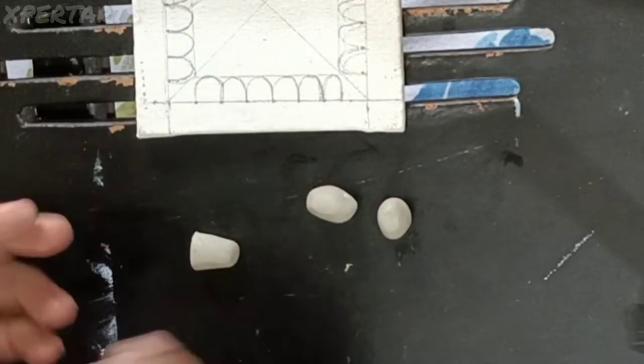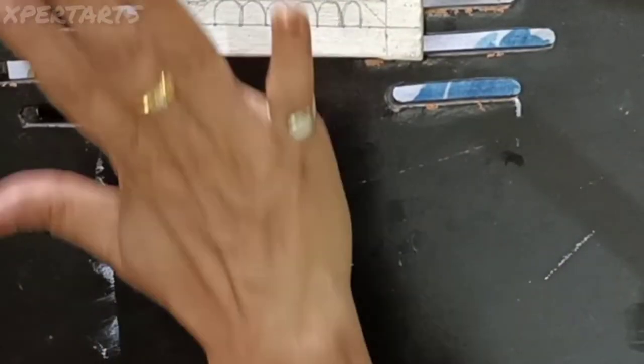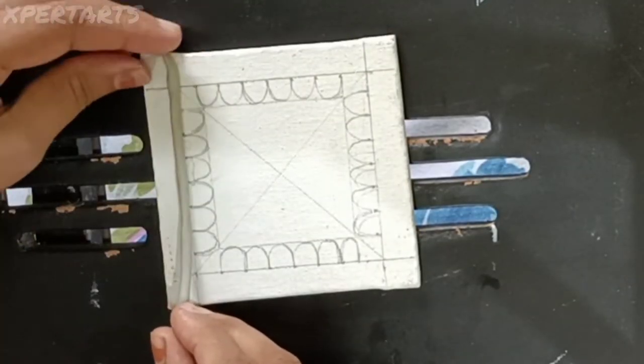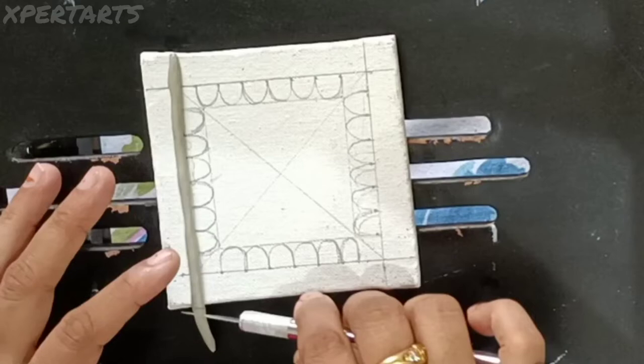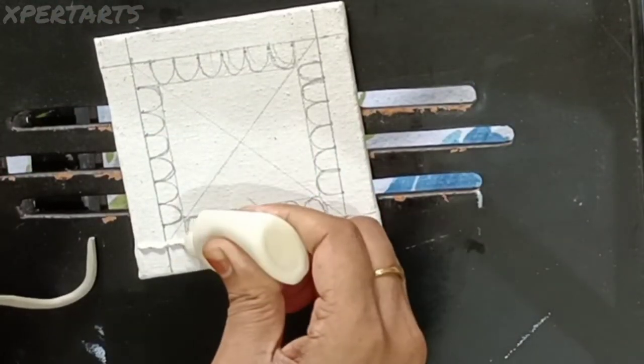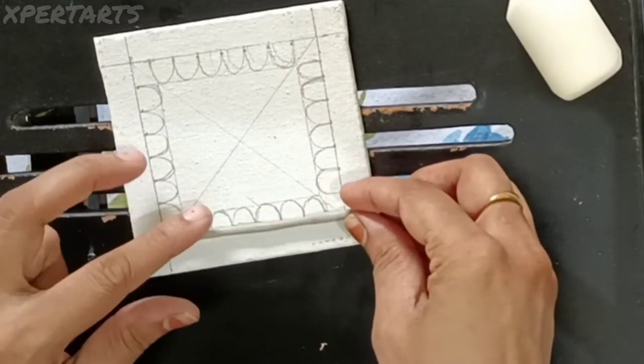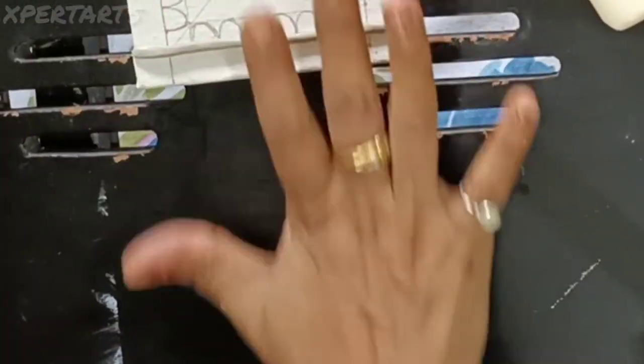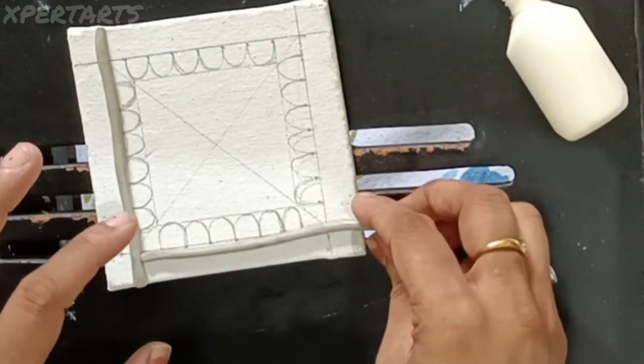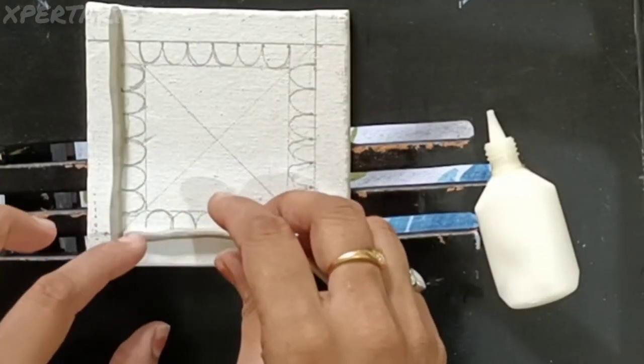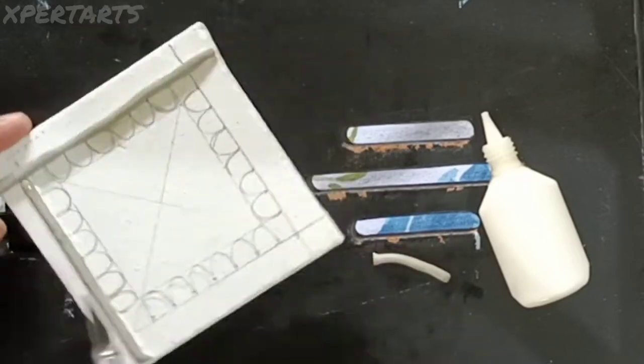This is homemade clay made with chalk powder and a humid glue. So if you want this clay, you will write it in the comment box so that I will upload a different video.